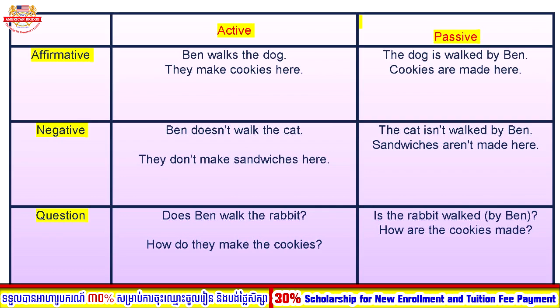For the question form, we move the verb to be to the front. 'Does Ben walk the rabbit?' becomes 'Is the rabbit walked by Ben?' — the rabbit moves from object in active to subject in passive, and 'walk' changes to verb three. For wh-questions: 'How do they make the cookies?' becomes 'How are the cookies made?' — we keep the wh-word at the front, then add the verb to be.